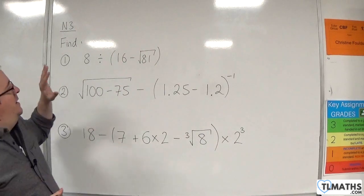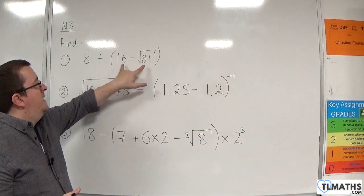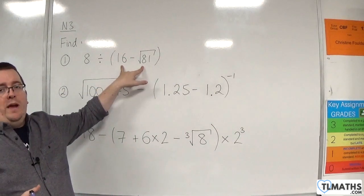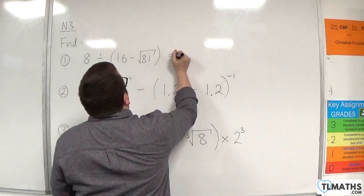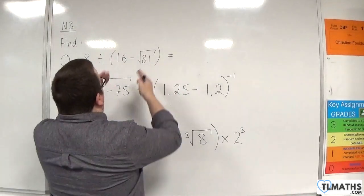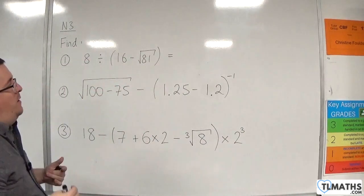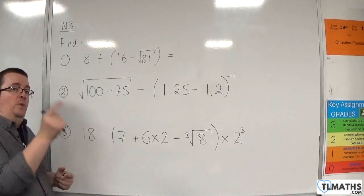Let's have a look at number one. We have 8 divided by open brackets, 16 take away the square root of 81. First of all, we've got to do what's in the bracket. Inside the bracket, we've got 16 take away root 81, but we know that we've got to do the roots before we do the subtraction.